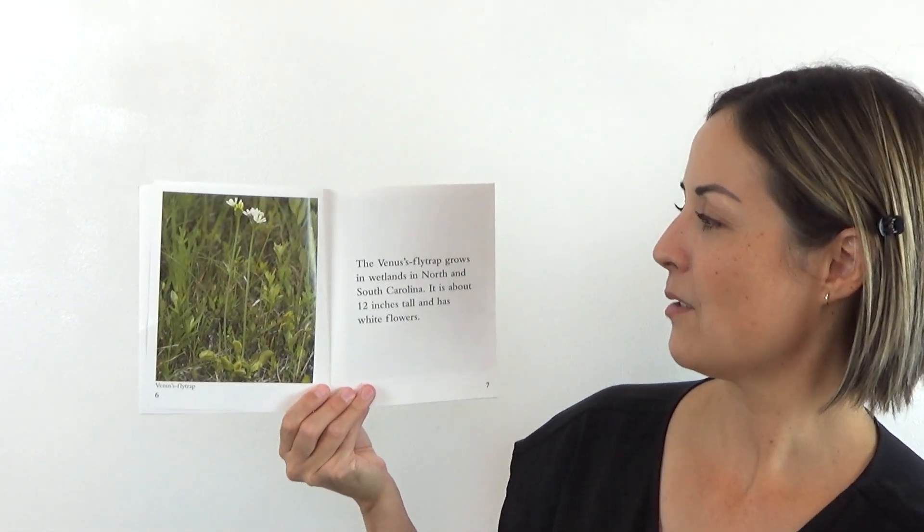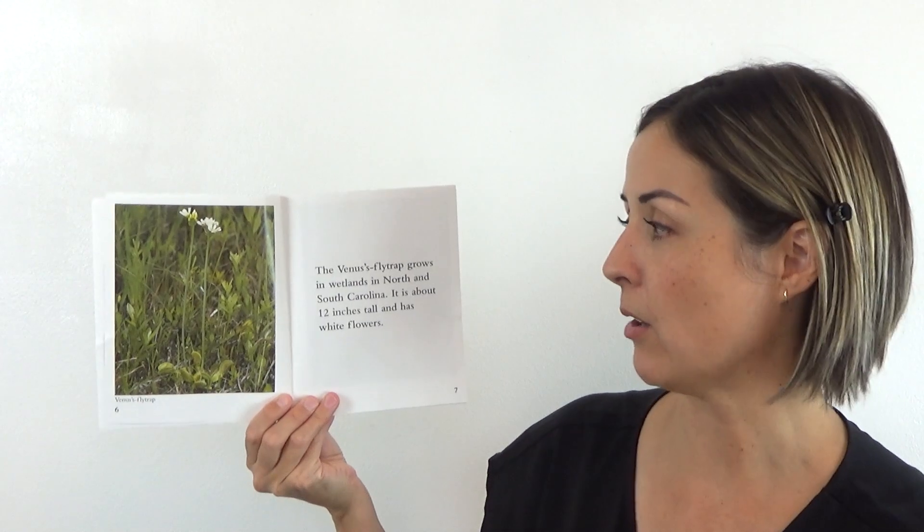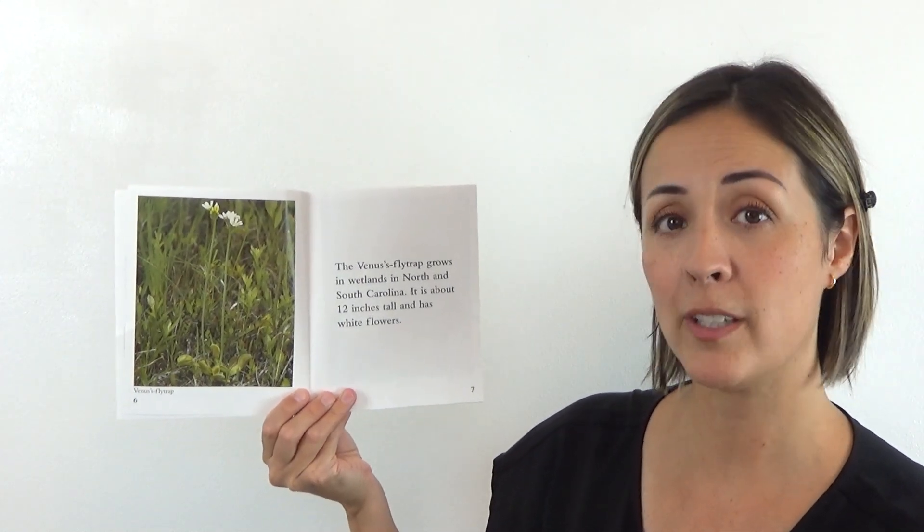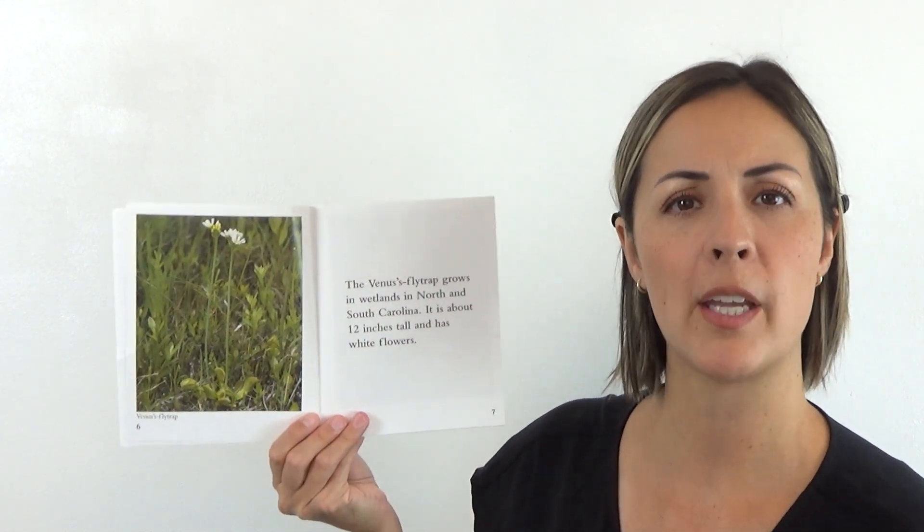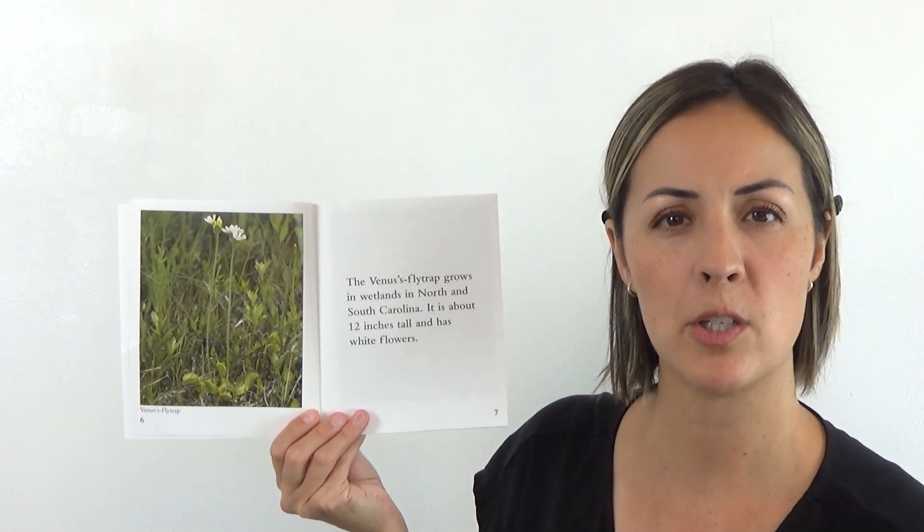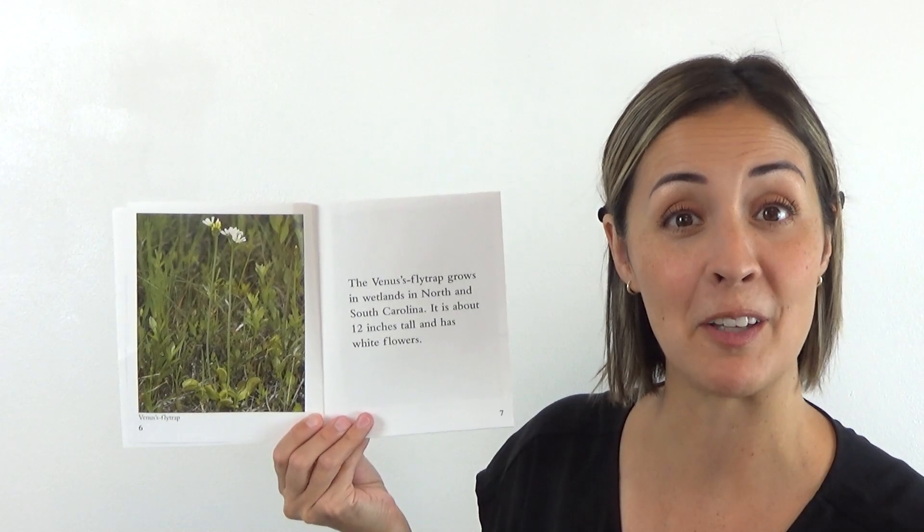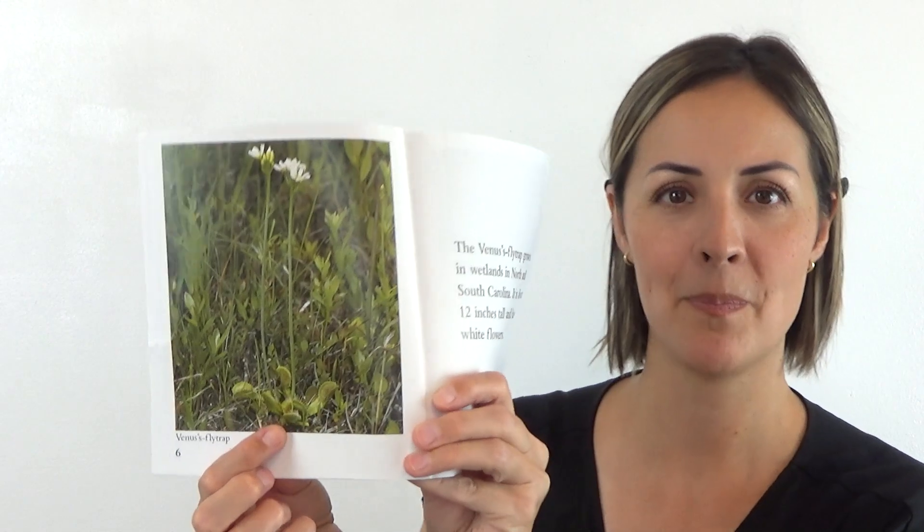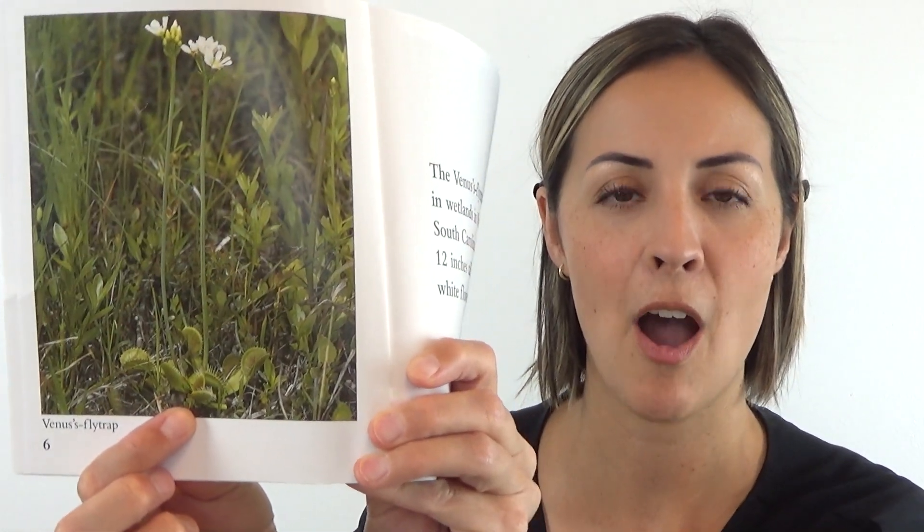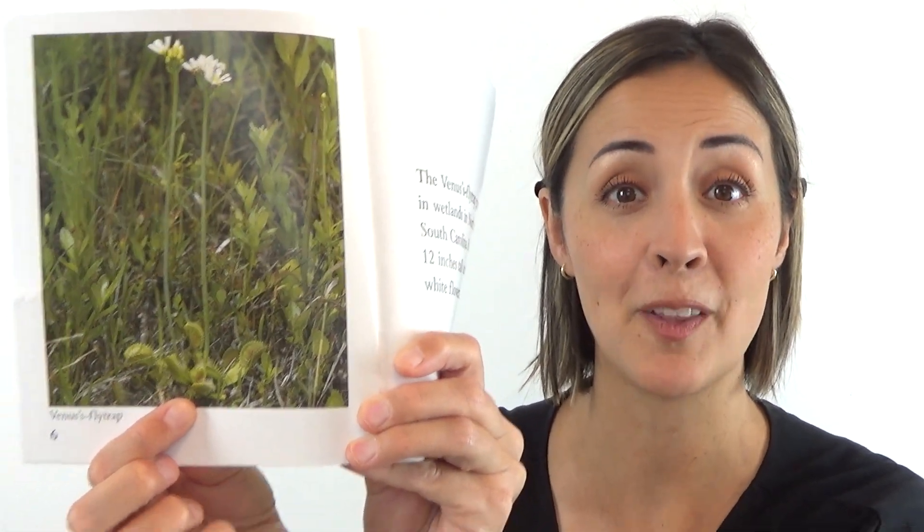The Venus flytrap grows in wetlands in North and South Carolina. It is about 12 inches tall and has white flowers. So if you were walking in a field and you saw those white flowers, you might just think, oh, those are lovely flowers. But if you looked at the base of the flowers, if you looked at the bottom, that's where you would see, oh, it's a Venus flytrap.